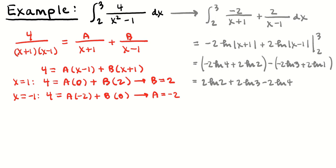All right, there you go. We found the antiderivative: negative 2 log of the absolute value of x plus 1, plus 2 log of the absolute value of x minus 1. We plug in x equals 2 and x equals 3 and subtract. It's important to know that when you're taking the log of 1, you're taking the log of e to the 0, and that is 0. This is almost always multiple choice, no calculator — you'll need to evaluate log of powers of e because they'll do that in the answer choices. You don't have to know log properties for AP Calculus anymore.